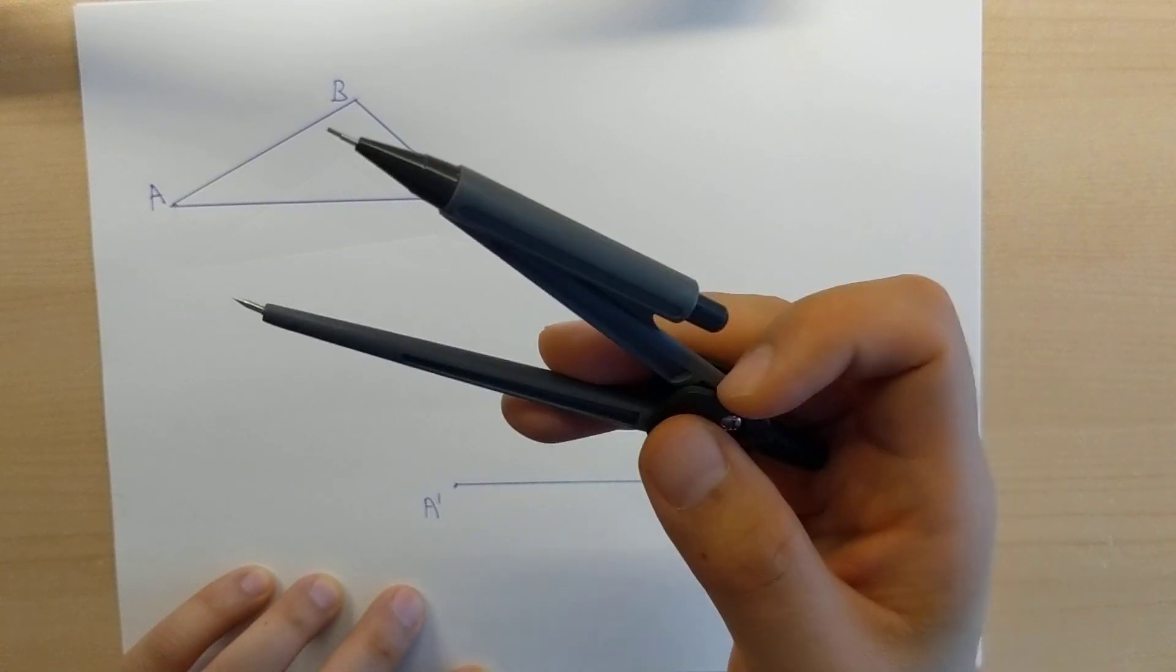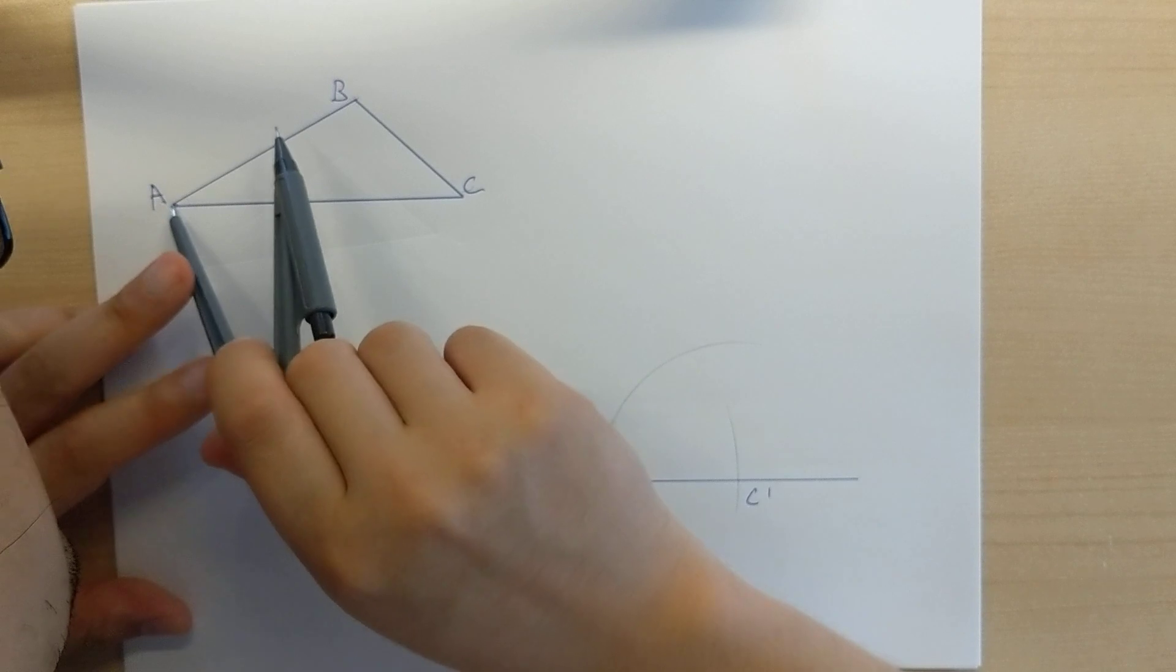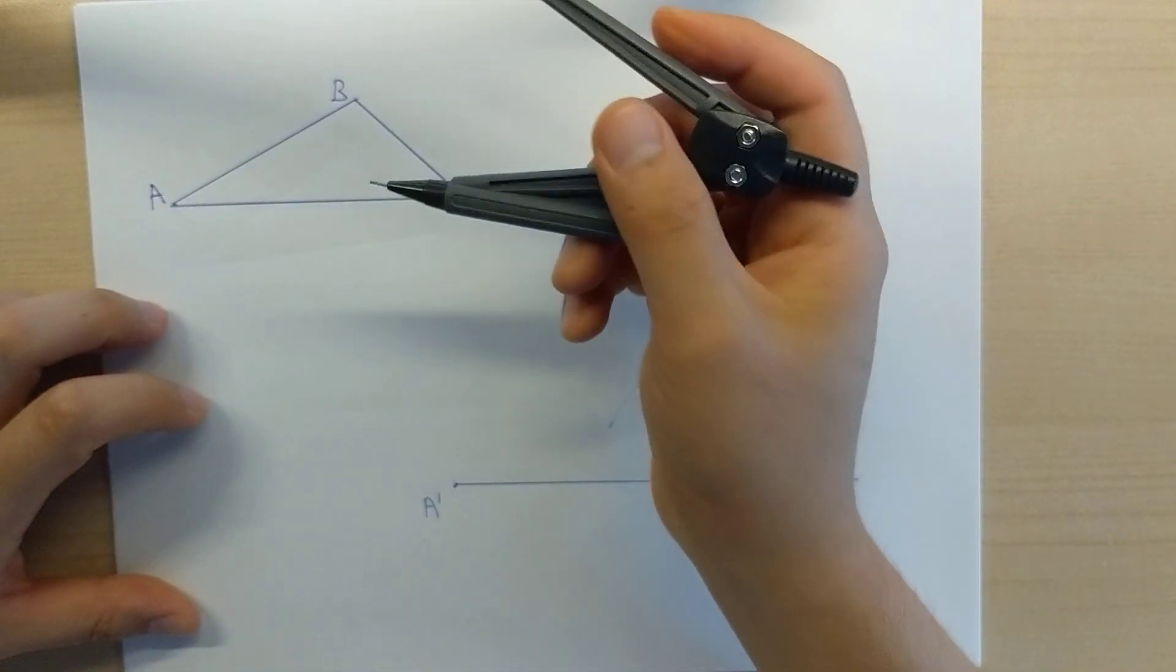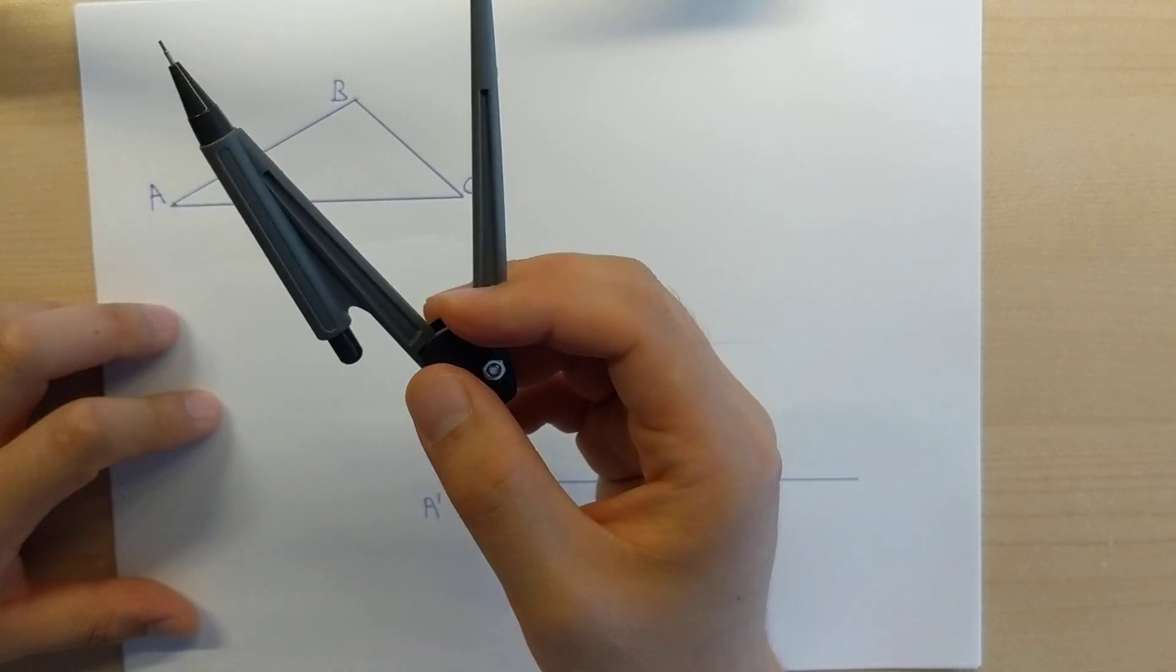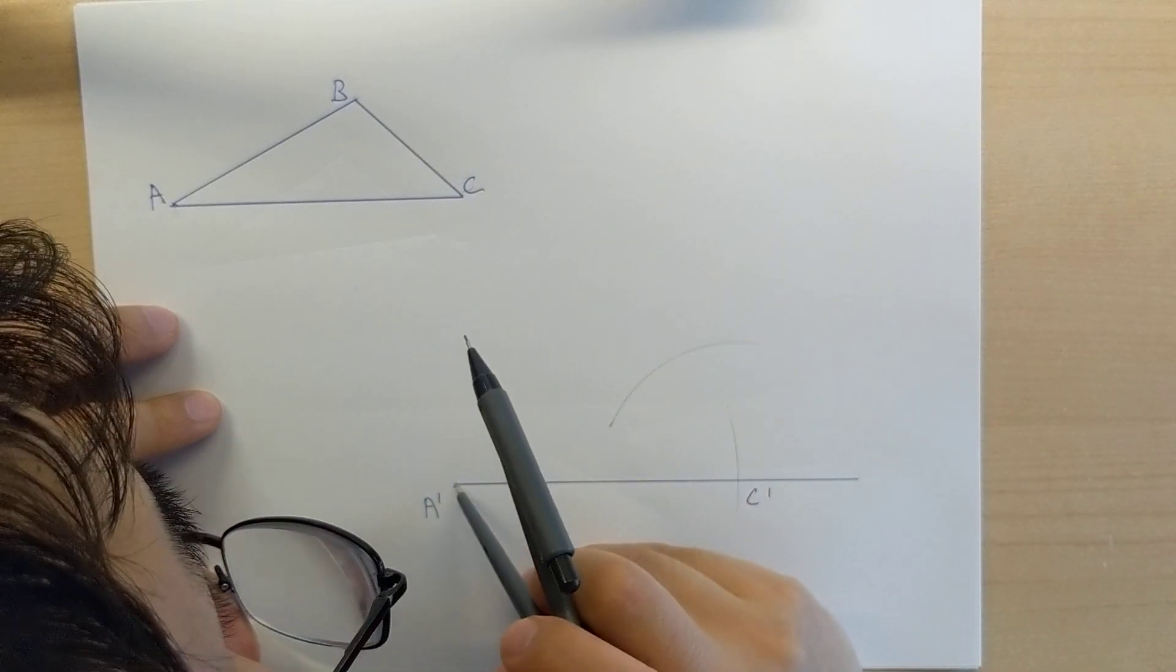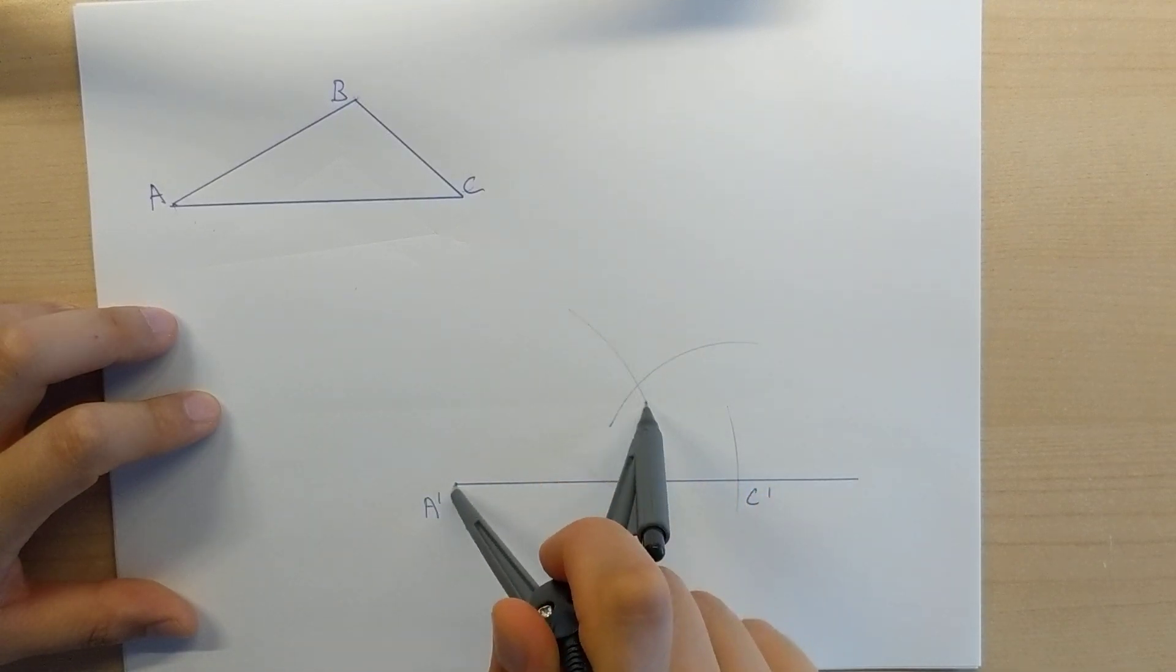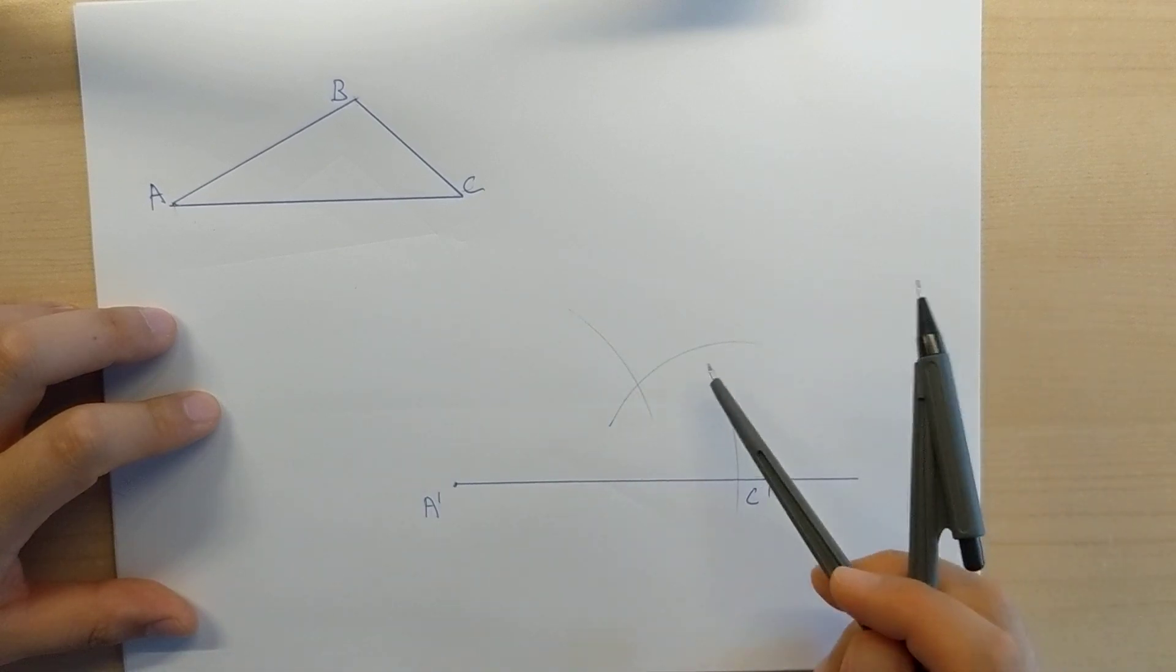What I'm going to do now is I'm going to take my compass and measure the length of AB. So, the compass setting right now is open to the length of AB. I pick up my compass setting, and I'm going to place my pin on A. And I am going to draw myself an arc. And if you notice, the arc that I draw will intersect with the arc that I drew a moment ago.